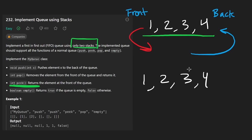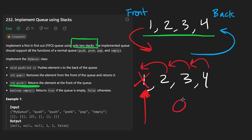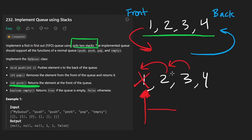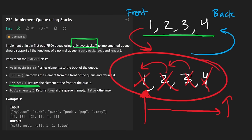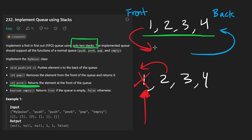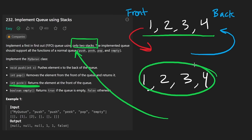Clearly the problem is that with a queue, we remove from the other side that we push from. So removing from an array here is not as efficient, because if we want to remove the front element, we have to shift everything over — that ends up being O(n). Given this type of data structure with two stacks, how can we try to solve this problem?